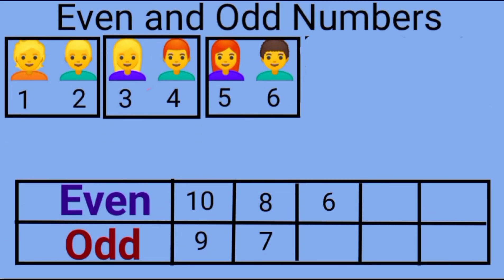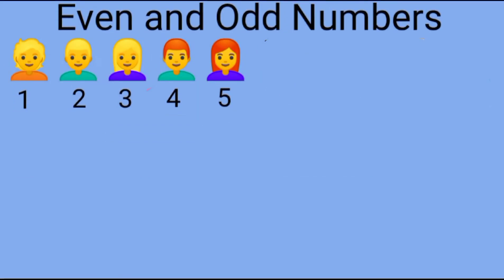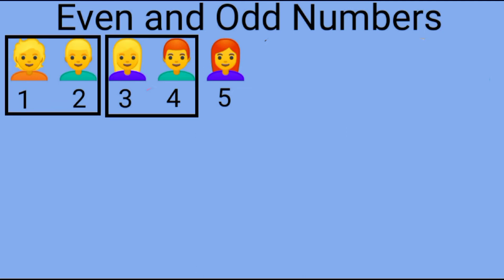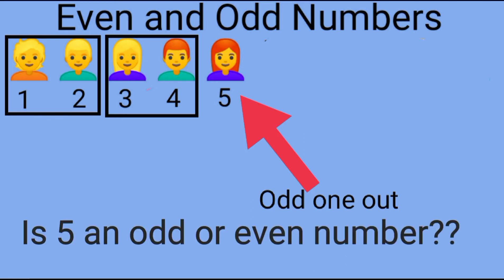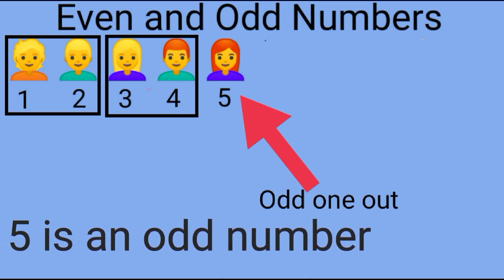What would happen if there were only five students in the class? Let us pair up all the five students. Have all the students been paired up evenly? Does anyone get left over? Yes, one of the students does not have a partner. Who is the odd one here? The fifth one is the odd one. So is five an odd or even number? Yes, five is an odd number.